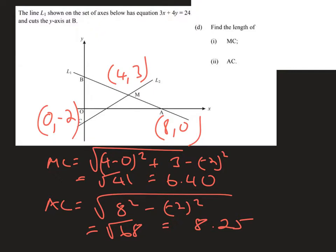In part D we're asked to find the length of MC and AC. MC is this length here. In effect we're going to use Pythagoras to recognize this is a right angled triangle. To work out MC we need the base. The x coordinate of M is 4 and of C is 0, so 4 minus 0 squared plus the height squared, which is 3 minus -2, so plus 5 squared. That's root 41 which is 6.4.